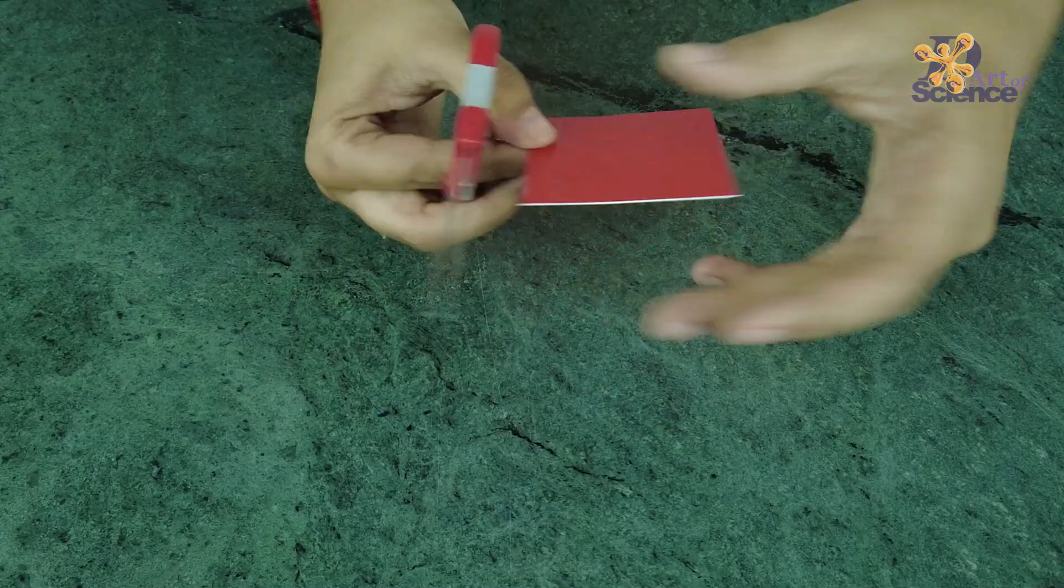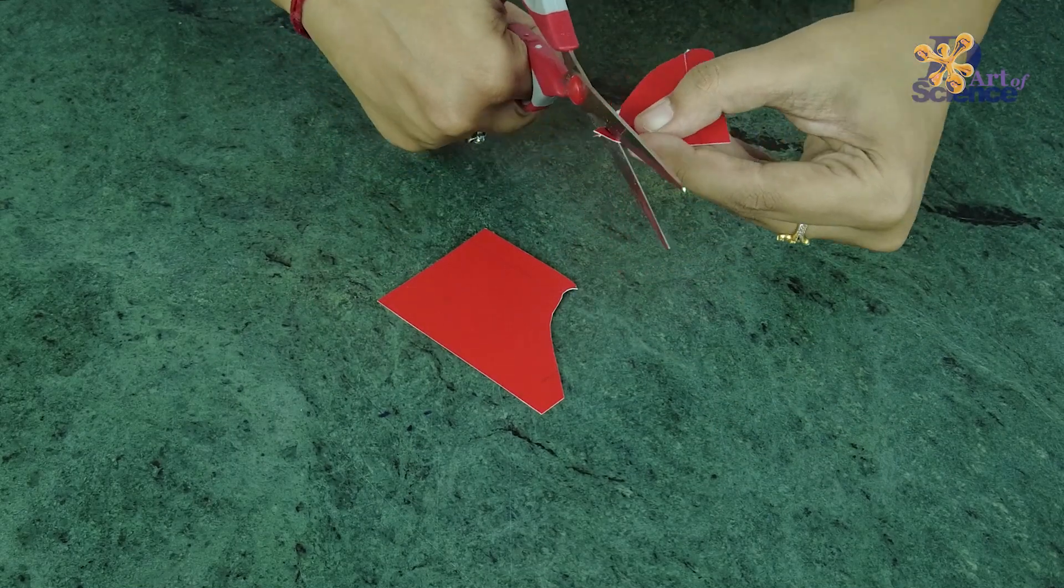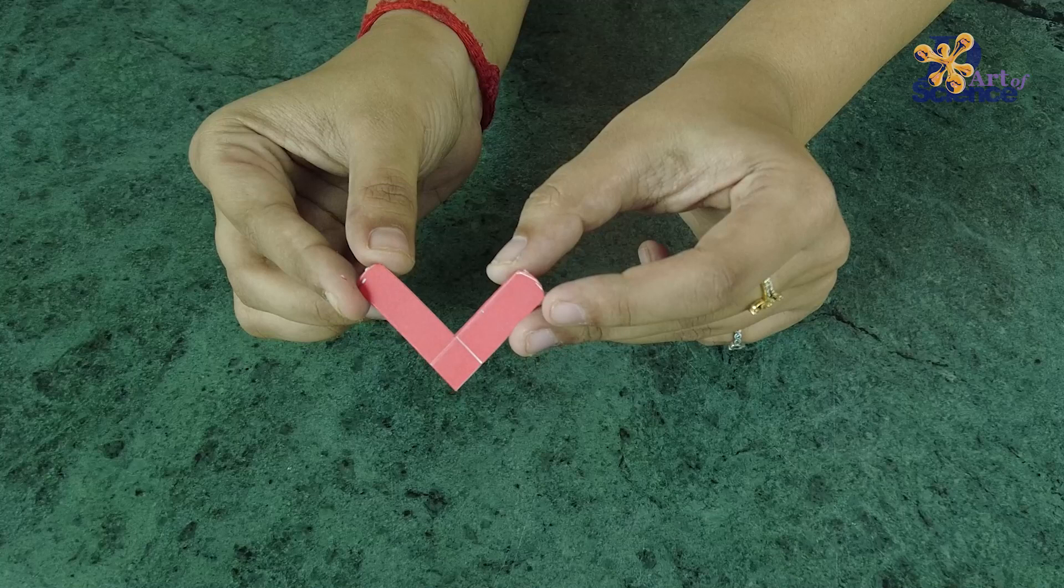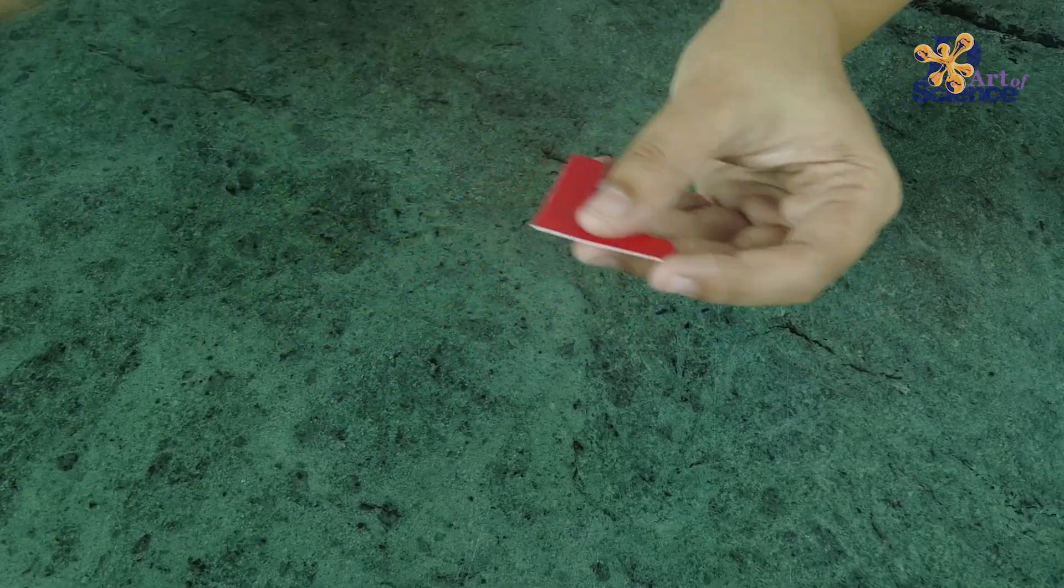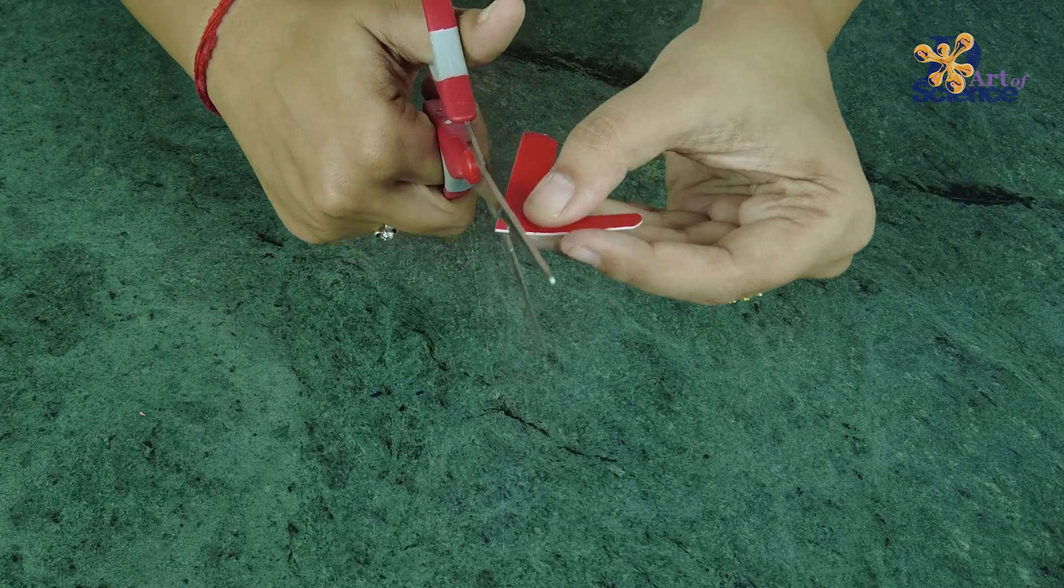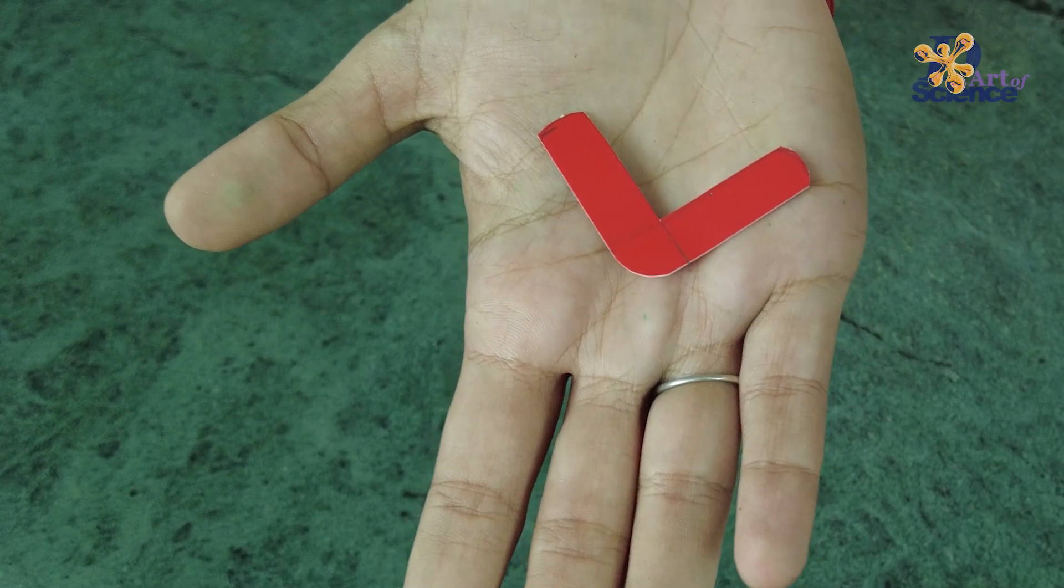Use a pair of scissors to cut this out. Cut a rounded edge on this corner as well. And that's it, the mini boomerang is ready.